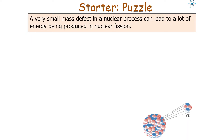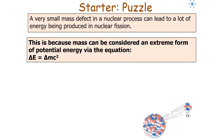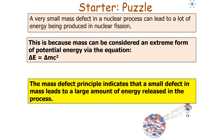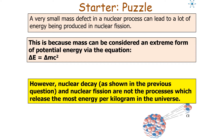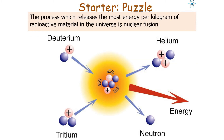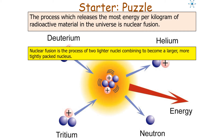A very small mass defect in a nuclear process can lead to a lot of energy being produced in nuclear fission. This is because mass can be considered an extreme form of potential energy via our equation ΔE = Δmc². The mass defect principle indicates that a small defect in mass leads to a large amount of energy released. However, nuclear decay and nuclear fission are not processes which release the most energy per kilogram in the universe. The process which releases the most energy per kilogram of radioactive material is nuclear fusion.